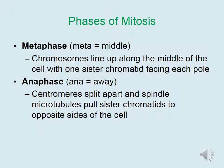During metaphase, the chromosomes line up along the middle of the cell with one sister chromatid facing each pole, or each end, of the cell. You can remember 'meta' as middle. During anaphase, the centromeres split apart and spindle microtubules pull the sister chromatids to opposite sides of the cell. You can remember 'ana' as away.